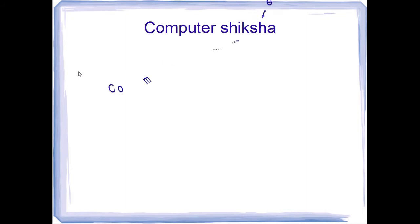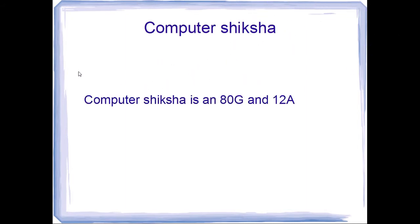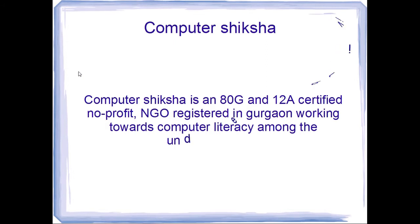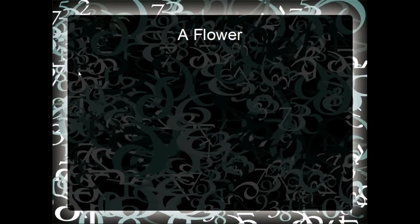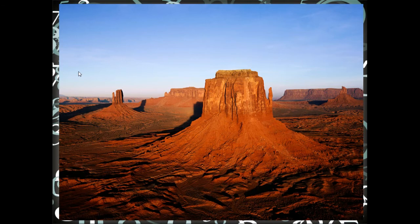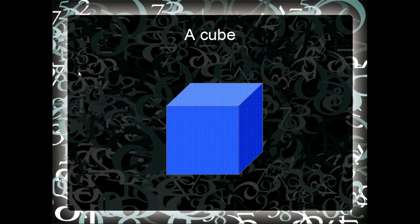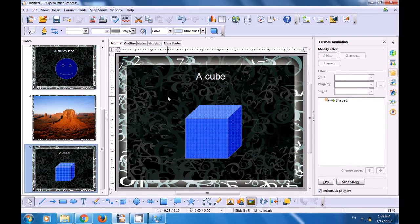So now when you run the slide show — you can use F5 — you are now running the slide show and you can see the custom animation happening. In the first slide, the contents are animated and you can see them coming slowly on the slide. This is how you will make a slide presentation using custom animation. The flower will slowly appear, then a smiley face appears, then the desert animation is applied, and then lastly the cube. This is how you can use new slides and apply custom animation.